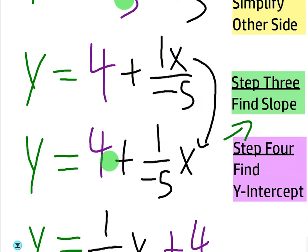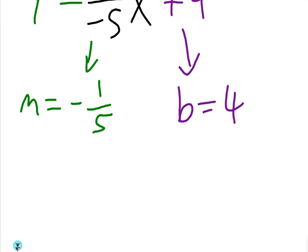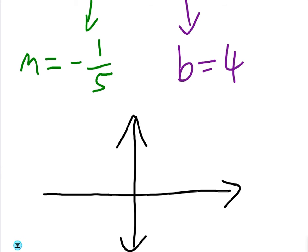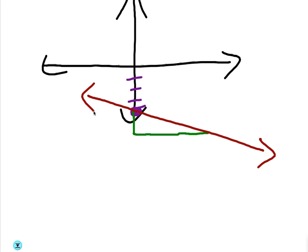Notice how different that looks from the beginning — you can't just look at the original equation and know what the slope and y-intercept are. I'm just going to draw a little sketch so you know why we're doing this. The y-intercept would be at negative 4, and the slope is down 1 and over 5. So we go down 1 and over 1, 2, 3, 4, 5 — and the graph is going to look something like this.